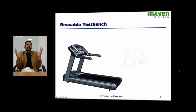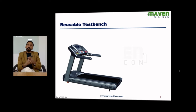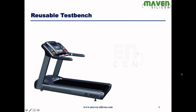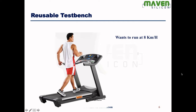Let's say three different people are going to use this treadmill one by one. The important thing is each individual has their own objective. This person wants to run at 8 kilometers per hour, burn 200 calories in 30 minutes, and doesn't want to change the slope — his focus is bodybuilding.